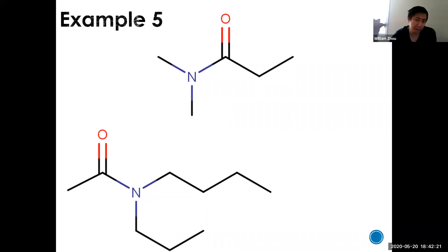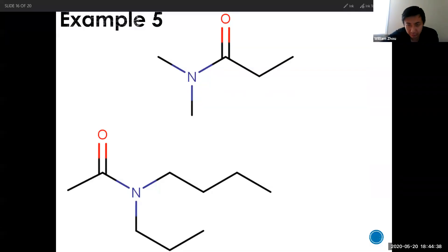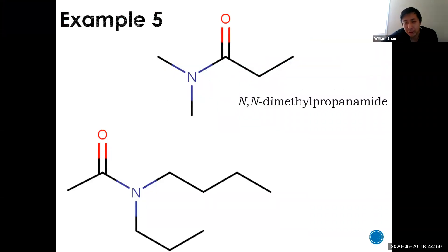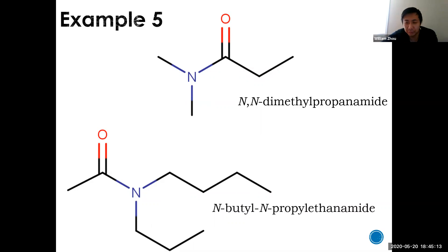Two more examples: the first has a propanamide parent (three carbons with the carbonyl) and two methyl groups on the nitrogen - combining identical substituents gives N,N-dimethyl propanamide. For the one on the bottom, ethanamide is the parent (shortest, but it has the carbonyl), with an N-butyl (four carbons) and an N-propyl. B before P alphabetically: N-butyl-N-propyl ethanamide. That's the last naming of amides.